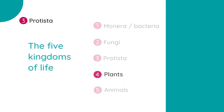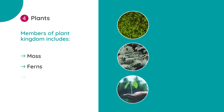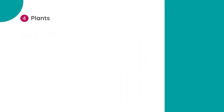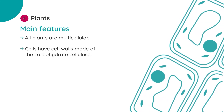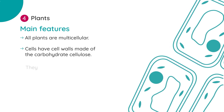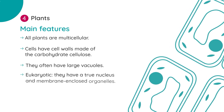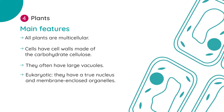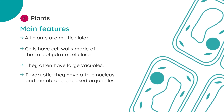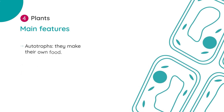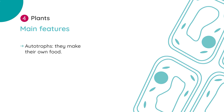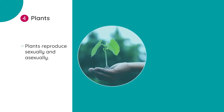The plant kingdom includes mosses, ferns, and seed-producing plants which can be split into flowering and non-flowering plants. Main features include: all plants are multicellular; their cells have cell walls made of the carbohydrate cellulose; their cells often have large vacuoles; they are eukaryotic meaning they have a true nucleus and membrane-enclosed organelles; chloroplasts in plant cells contain the pigment chlorophyll which enables photosynthesis; all plants are autotrophs meaning that they make their own food, and plants can reproduce sexually and asexually.